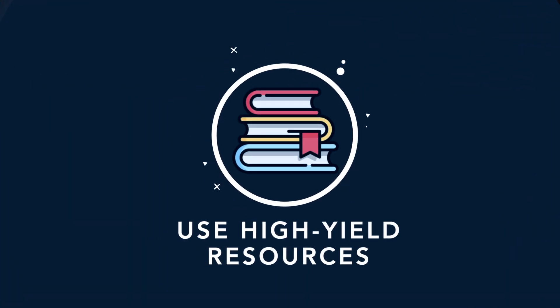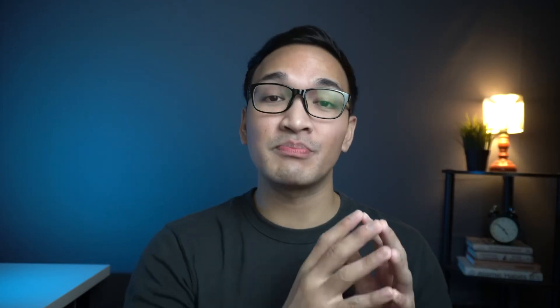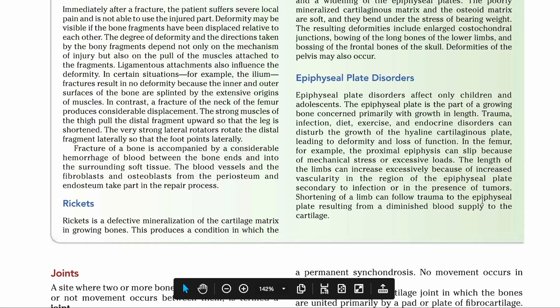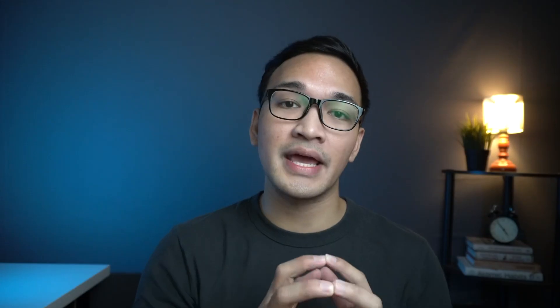Tip number one is to use high-yield resources. In terms of recommended textbooks, you can go with Snell Clinical Anatomy by Regions. I recommend this book because it discusses the important structures in chunks or in regions, which makes it easier to know how certain structures fit together within that specific compartment. It also has clinical notes, which give you the clinical implications of knowing that structure and which helps in remembering them.